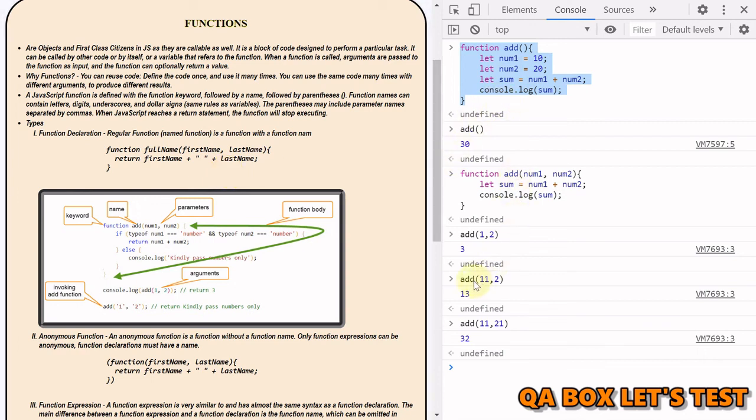Just remember, when you're invoking a function, these values are called arguments. When you define a function, these values are called parameters. You can also remember them like these are the variable names, and when you invoke the functions, you are actually passing in the values. Variables in functions are called parameters, and the values are called arguments. That's about functions.